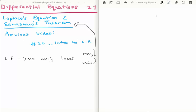Earnshaw's theorem asks: is it possible to suspend a charged particle using other charged particles or using an electric field? Let's say, for example, we have a cube of particles.